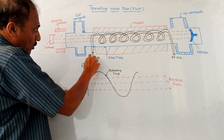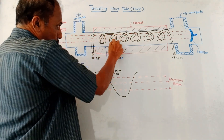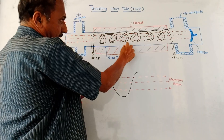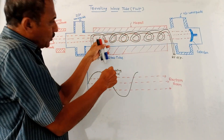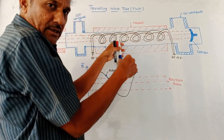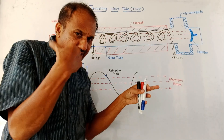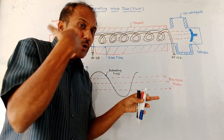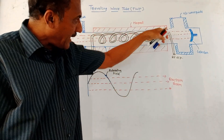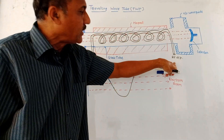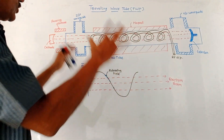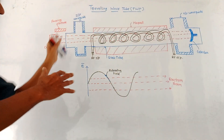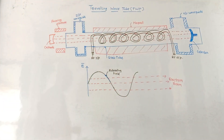As we move from one turn to another turn of the coil, the bunching process goes on improving, and at the output you get the amplified RF output signal. This is how the travelling wave tube works.